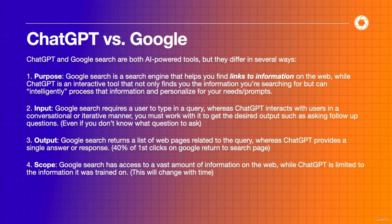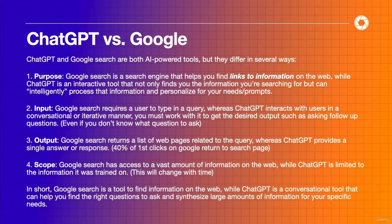The last point is scope, and this will change with time. Currently Google has access to more and more current information on the web. ChatGPT is limited to the information it was trained on, though eventually tools like ChatGPT will be connected to current online information in real time. In short, Google is a search tool to find information on the web, while ChatGPT is a conversational tool that helps you get the right questions to ask and synthesize large amounts of information for your specific needs.